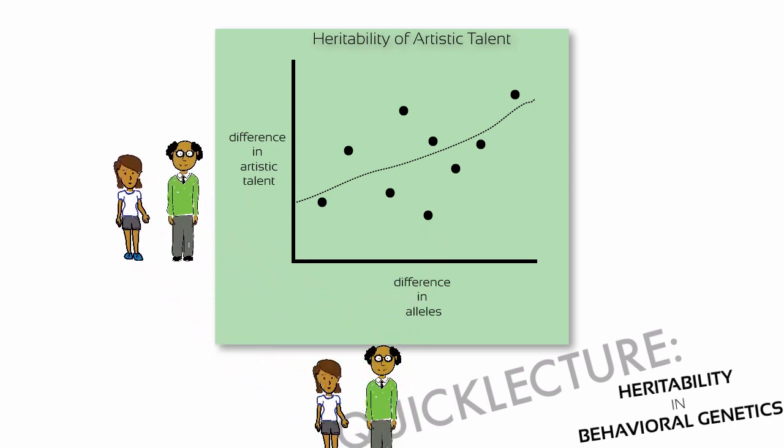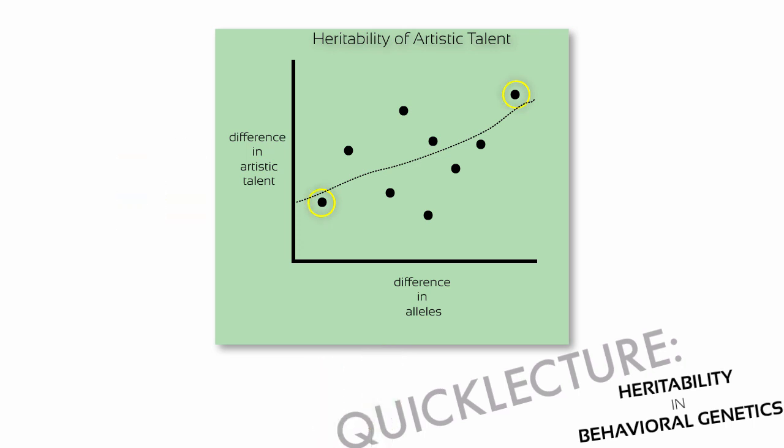In the idealized graph, I've made two circles. The one at the lower left might represent my brother and me. We don't differ very much on genetics, because we're low on the x-axis, and we don't differ much in our artistic talent, which is why we're low on the y-axis. The upper circle might represent a perfect stranger and me. We would be maximally different in our genetics, being high on the x-axis, and maximally different in our artistic talent, being high on the y-axis. A graph like this indicates a large degree of heritability.